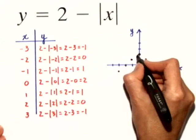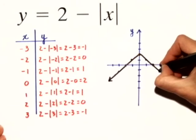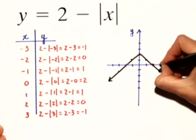We know an absolute value equation has a V shape, and this is the graph of the equation y is equal to 2 minus the absolute value of x.